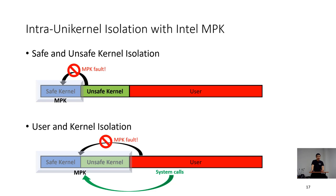Now we are moving on to design and implementation of our isolation scheme. We protect safe kernel memory from the unsafe kernel code. We also protect the entire kernel memory from the user code. The user application can only interact with the kernel through system calls. Other than the system calls, MPK fault terminates the execution.